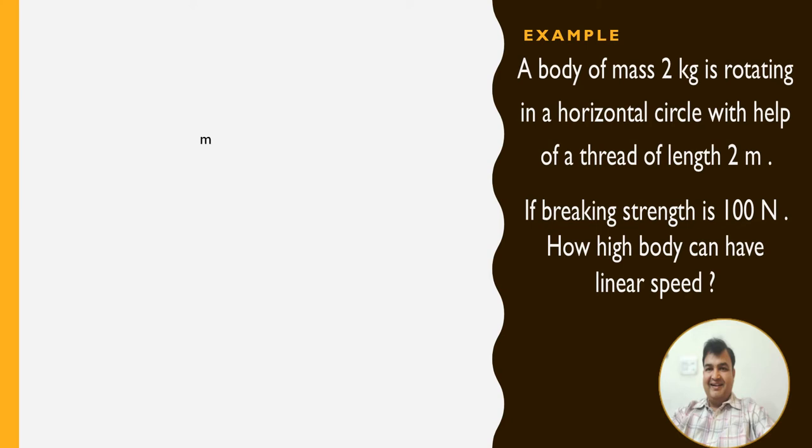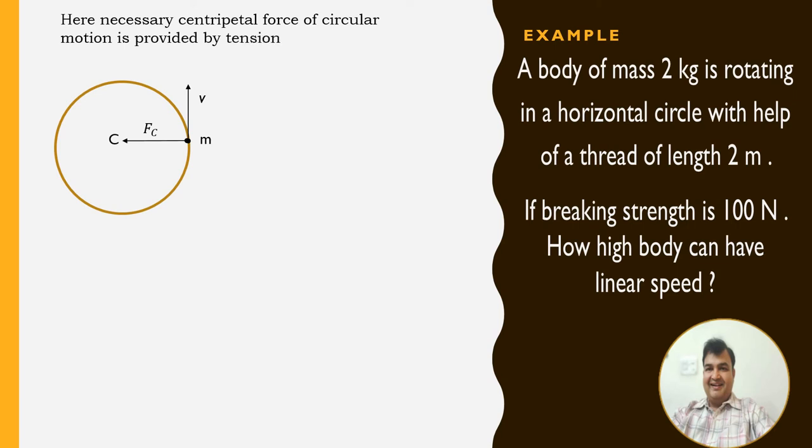Say m is the mass of the particle. Look at the diagram which is to move along the circular track in horizontal plane. Say c is the center of the circle. This is showing the radius. Along this vector we already discussed what the force would be: the centripetal force. There should be a tangential velocity, say V. Here, the necessary centripetal force is provided by tension in the thread. Therefore...